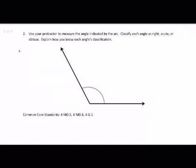So Problem 2 says, use your protractor to measure the angle indicated by the arc. Classify each angle as right, acute, or obtuse. Explain how you know each angle's classification.